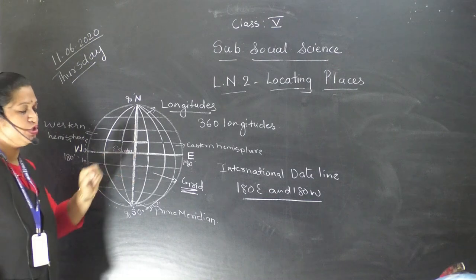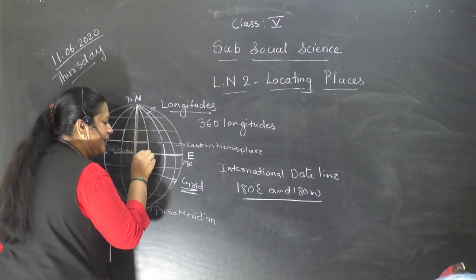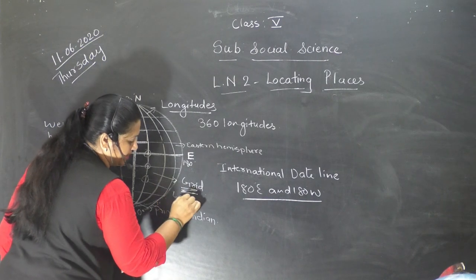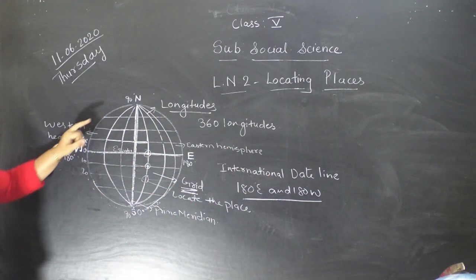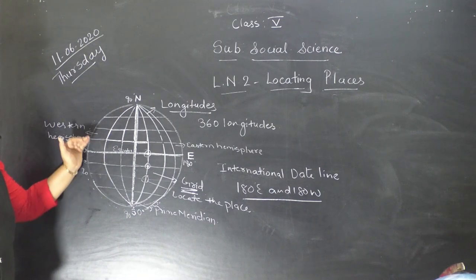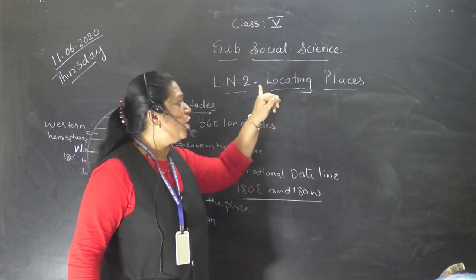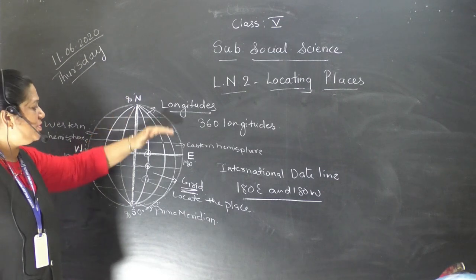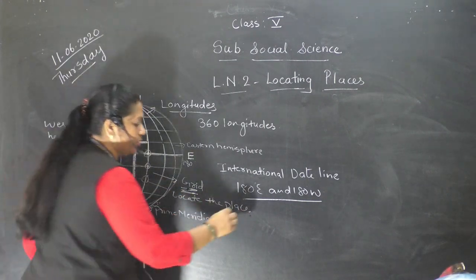Why do we use this intersection point? The point at which the latitudes and the longitudes intersect each other helps us to locate a place. That is why we study about latitudes and longitudes — so that we can easily locate places. The name of the lesson is 'Locating Places,' and the grid formed by latitudes and longitudes helps us to locate places on the globe.